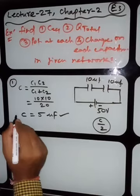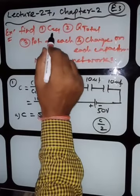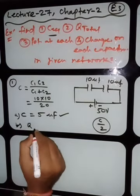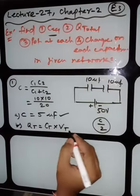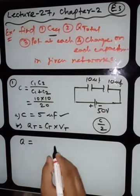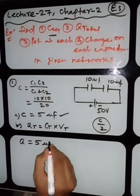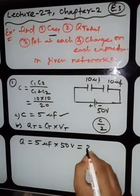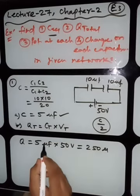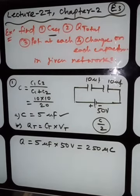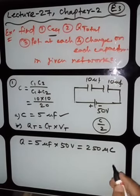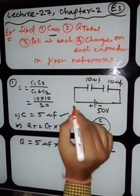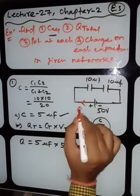Now the second quantity: Q total equals C total into V total. So Q total is 5 microfarad into 50 volt, which gives 250 microcoulombs. This total charge will start flowing through the network.